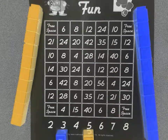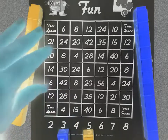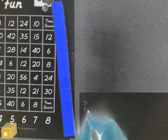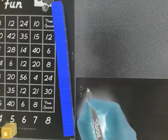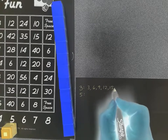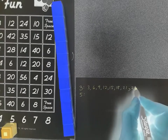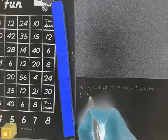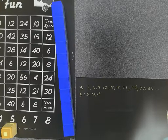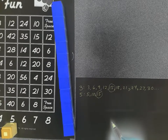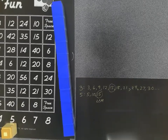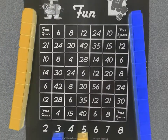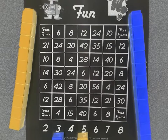To find the Least Common Multiple of three and five, one good strategy is to list multiples. Counting by threes: three, six, nine, twelve, fifteen, eighteen, twenty-one, twenty-four, twenty-seven, thirty — and keep going if needed. Counting by fives: five, ten, fifteen — there's a match! The first common multiple they share, the Least Common Multiple, is fifteen. Whoever's turn it was gets to cover up the fifteen on the board if they got it right.